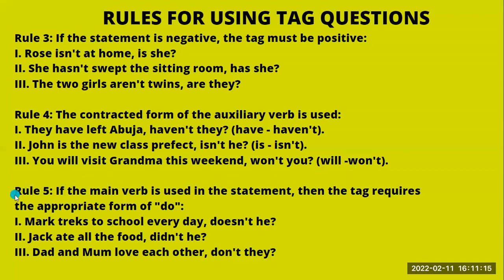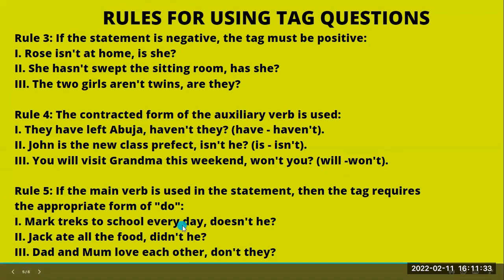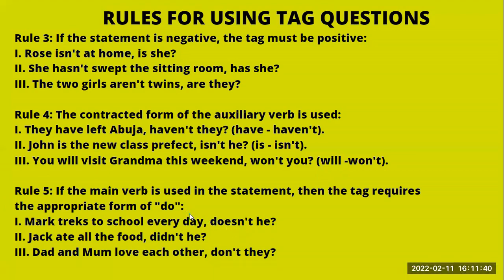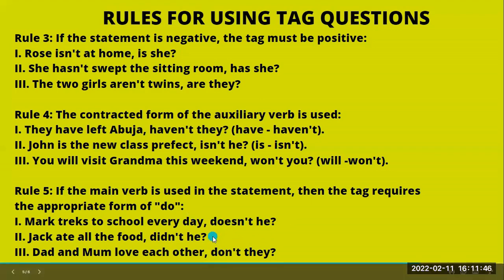Rule number five: if the main verb is used in the statement, then the tag requires the appropriate form of 'do.' For example: 'Mark tries to school every day, doesn't he?' — 'doesn't' is the appropriate form of 'do' in this case. Another example: 'Jack ate all the food, didn't he?' — 'didn't' is the appropriate form of 'do.' And: 'Dad and mom love each other, don't they?' — 'don't' is the appropriate form of 'do' in this case.